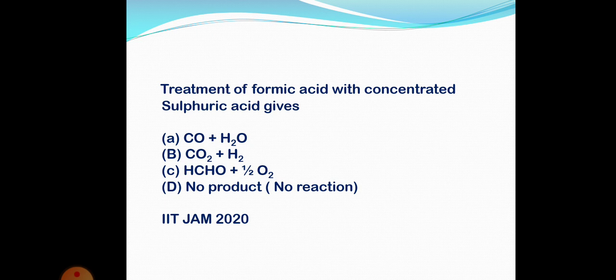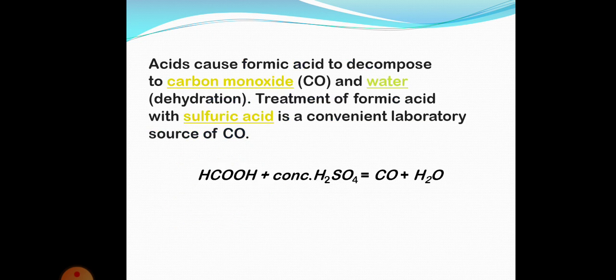The next question is also from IIT JEE 2020: treatment of formic acid with concentrated sulfuric acid gives which product? Concentrated sulfuric acid is a very good dehydrating agent, so this is a dehydration reaction. When water is removed from formic acid, the product is carbon monoxide. Sulfuric acid causes formic acid to decompose to carbon monoxide and water — this is a convenient laboratory source of carbon monoxide.